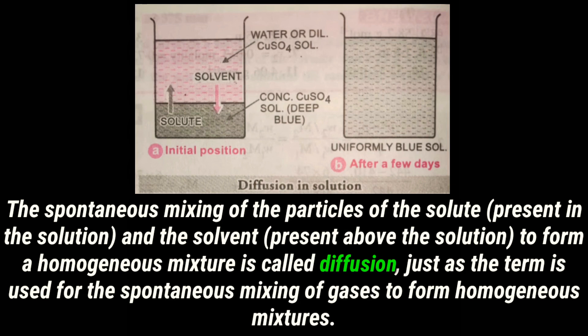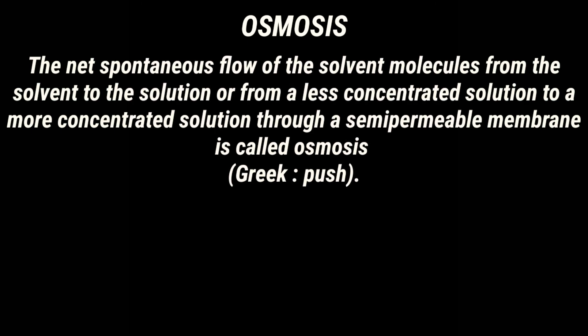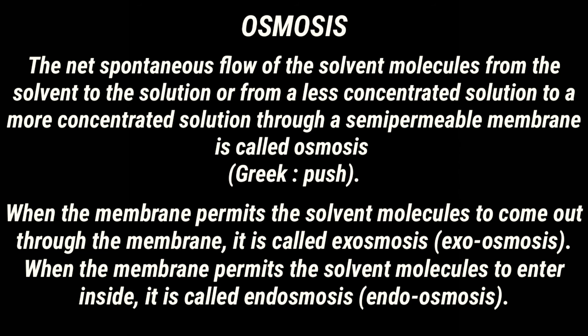Osmosis is the net spontaneous flow of solvent molecules from the solvent to the solution, or from a less concentrated solution to a more concentrated solution, through a semi-permeable membrane. When the membrane permits solvent molecules to pass out through it, this is called exosmosis. When the membrane permits solvent molecules to enter inside, it is called endosmosis.